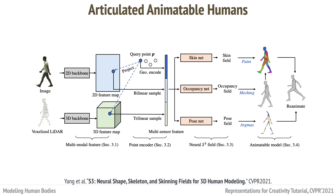Another work also appearing at this CVPR is S-Cube, which is a full pipeline of human body digitizing and can be applied to varying input types. It utilizes a multi-head network which produces shape, pose, and rigging all together, forming a complete avatar.